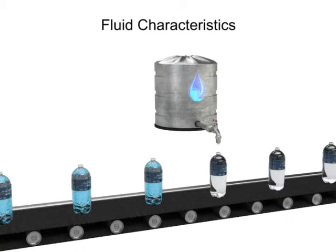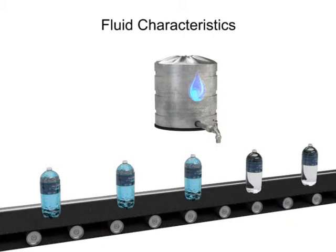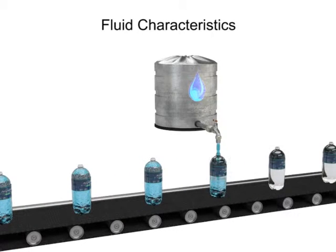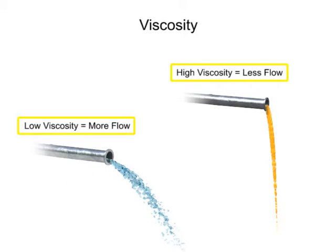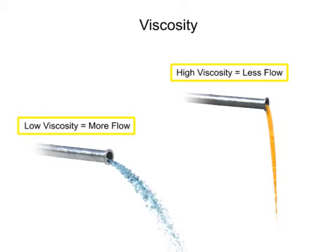Fluids used in mechanical systems come in many different types. The type of fluid chosen for a particular application depends on its characteristics. One of the most important characteristics of a fluid is its viscosity. Viscosity is defined as a fluid's resistance to flow.